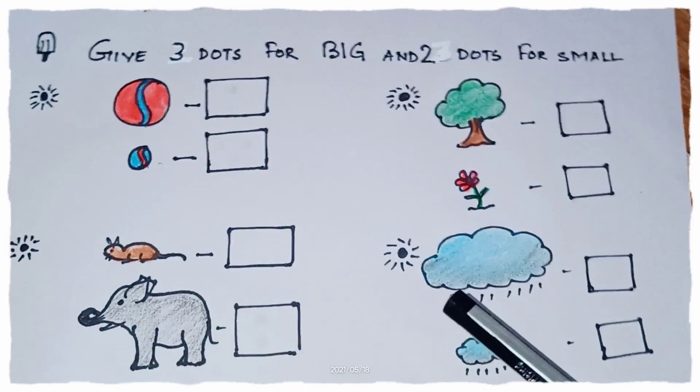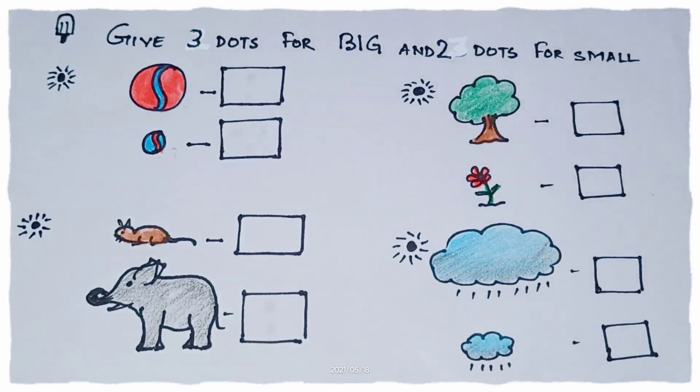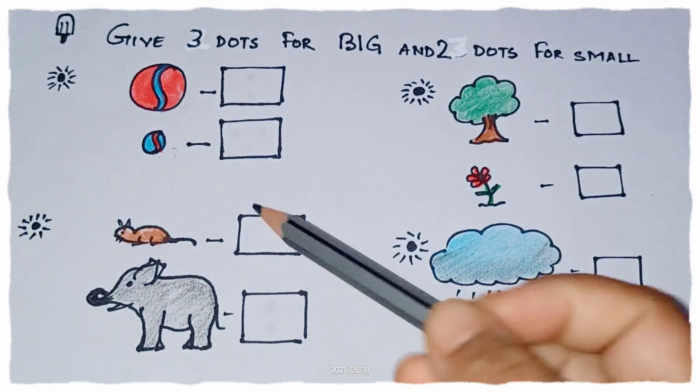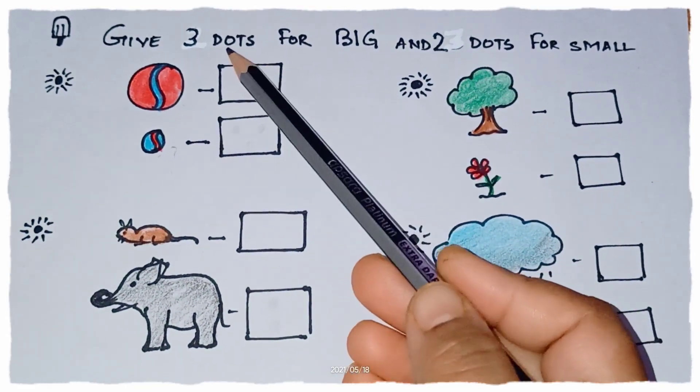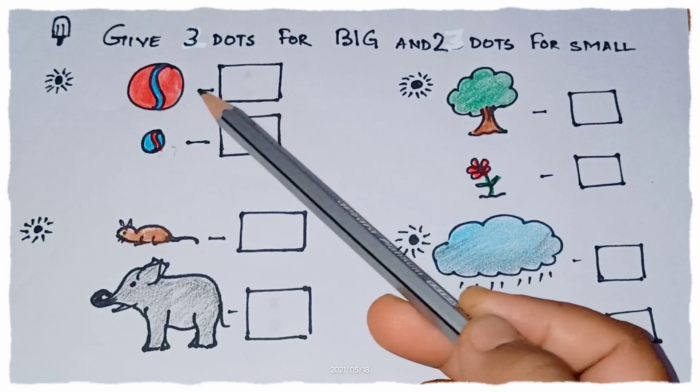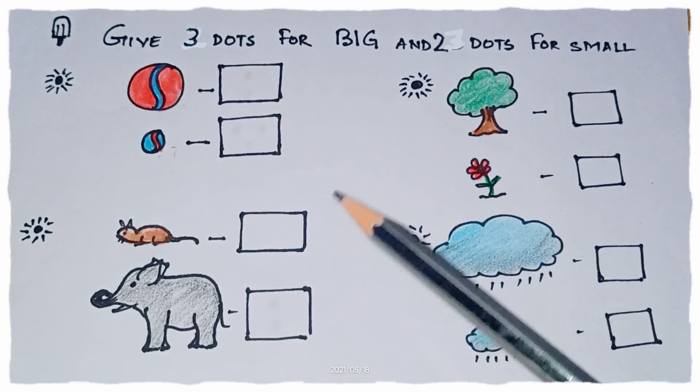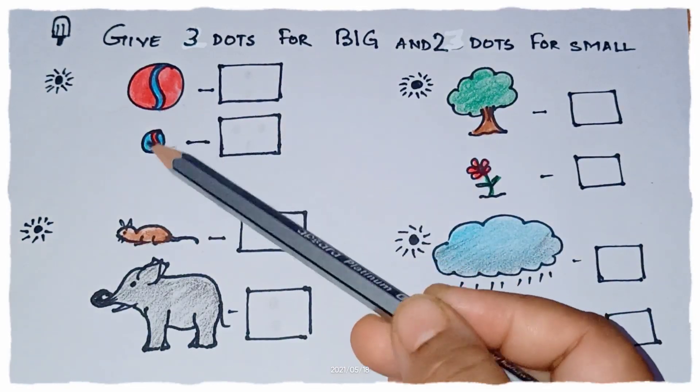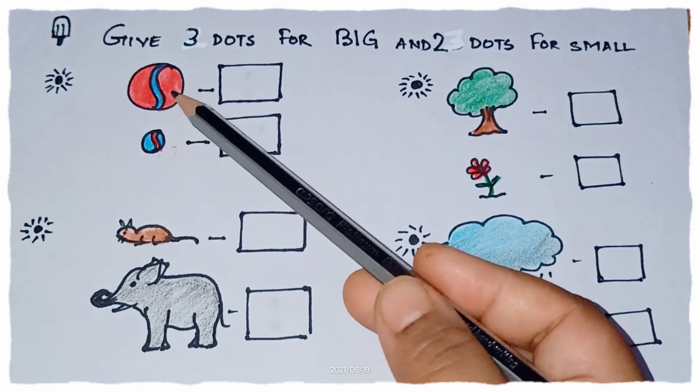Now what we have to do here is in big picture we have to give here 3 dots and for a small picture, we will give two dots. So in both the balls, which one is big?